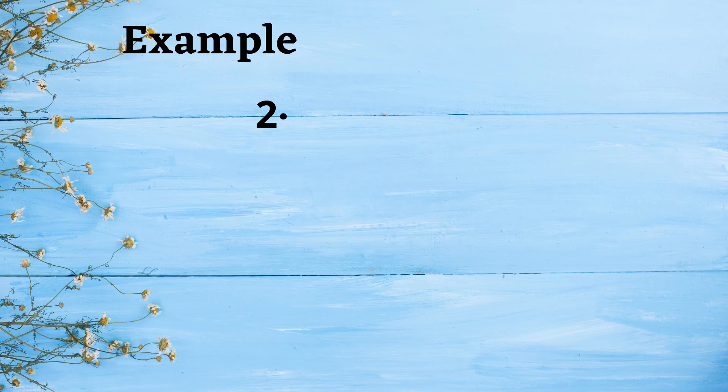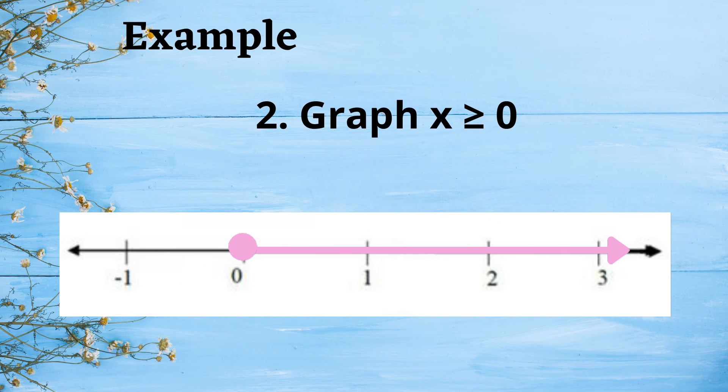Number 2 example is, graph x ≥ 0. A filled circle is used because the inequality symbol is greater than or equal and it is also located at 0. Then the arrow is going to the right side because of the symbol greater than.